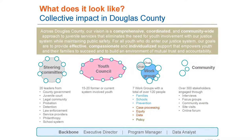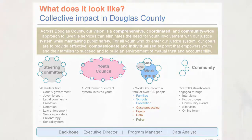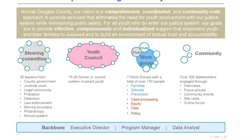There were seven separate work groups representing over 120 people, covering thematic areas: family, schools, prevention, equity, data, and policy. Over 300 community stakeholders were engaged through one-on-one interviews, focus groups, and online forums. The backbone was three FTEs: an executive director, a program manager, and a data analyst. That gives you a sense of the overall shape.